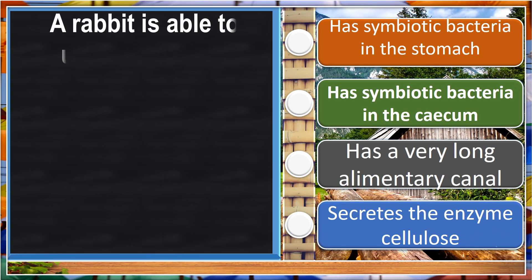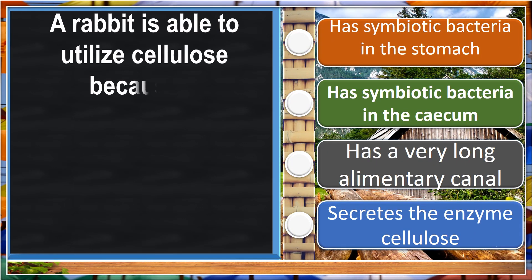A rabbit is able to utilize cellulose because it has symbiotic bacteria in the caecum.